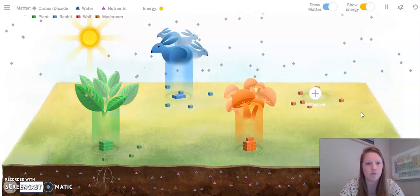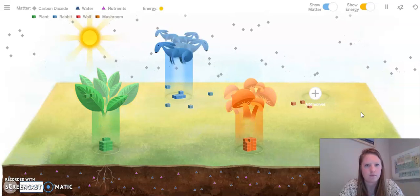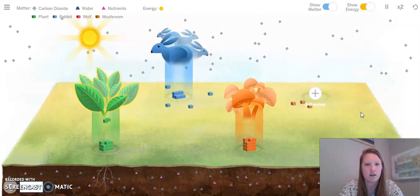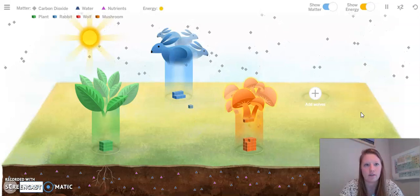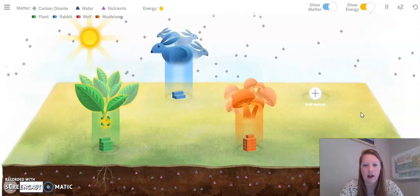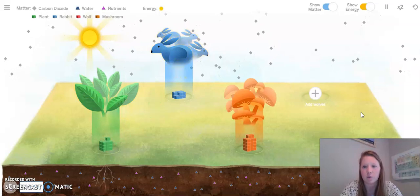Again, remember that the cubes represent matter. The sun is giving off energy. It looks like without the wolves, the rabbits just started to get more perky. Let's continue watching.